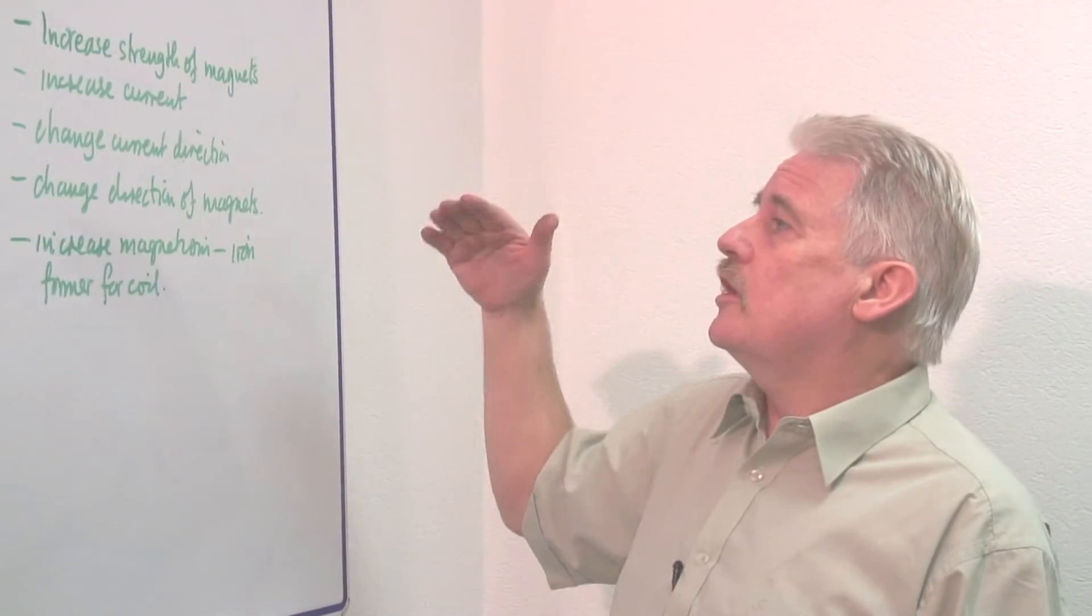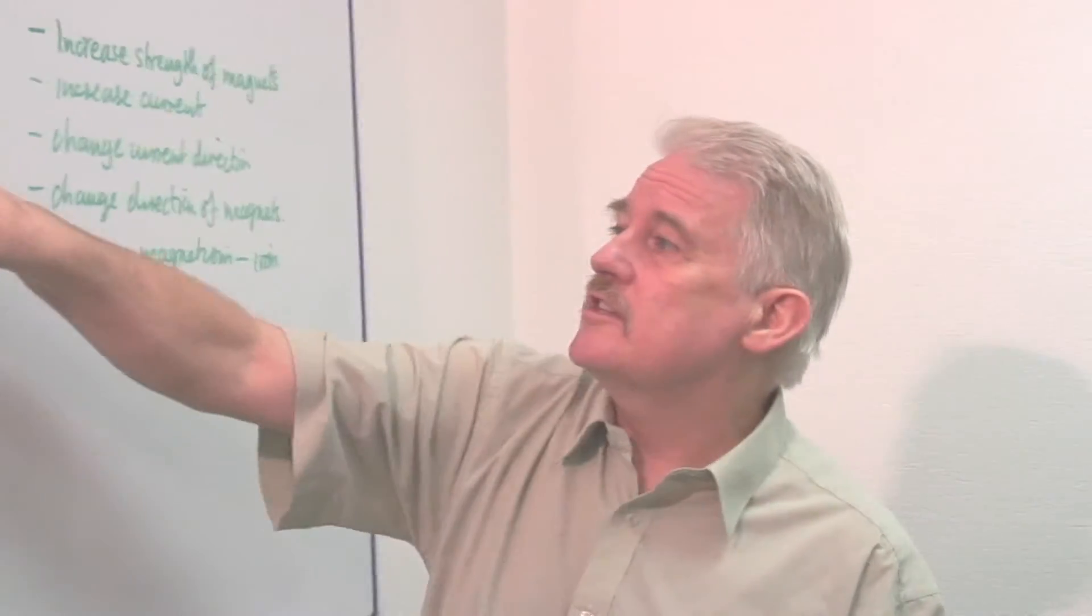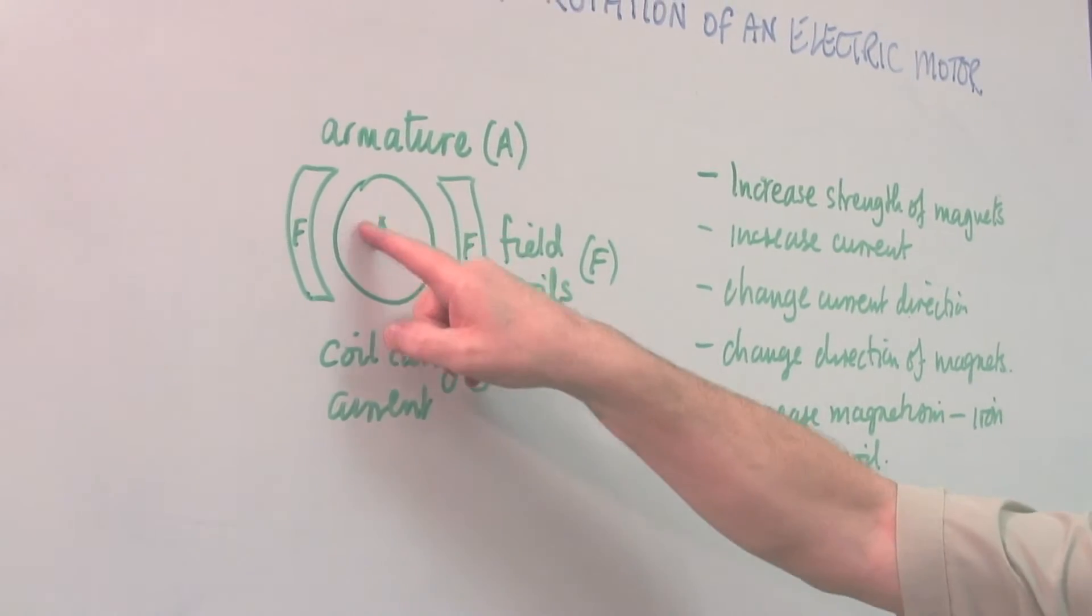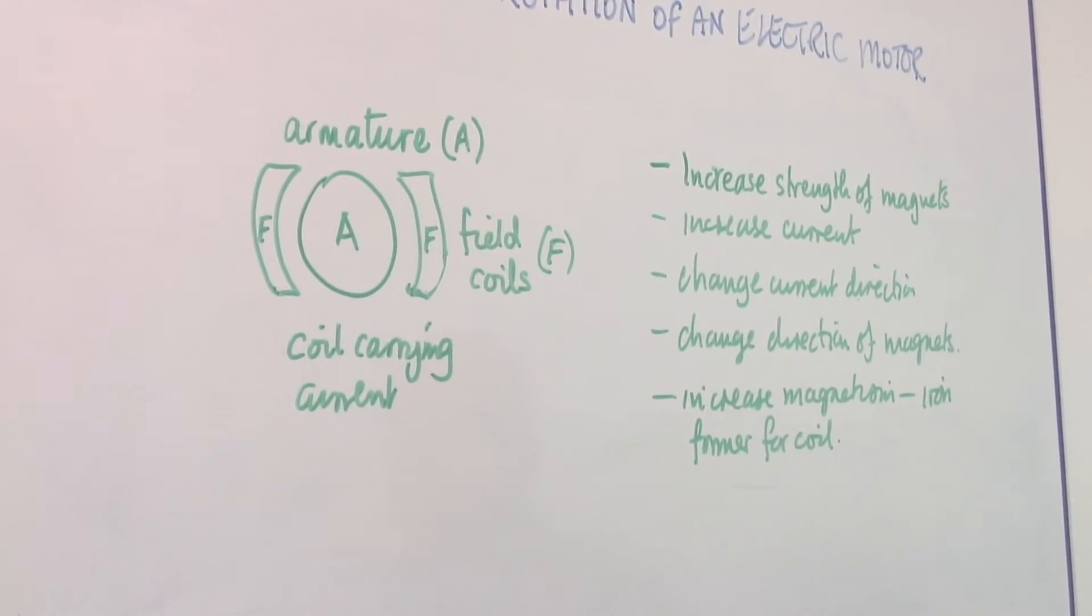And we can also increase the current in the armature. So this current in the armature and the current in the field coils.